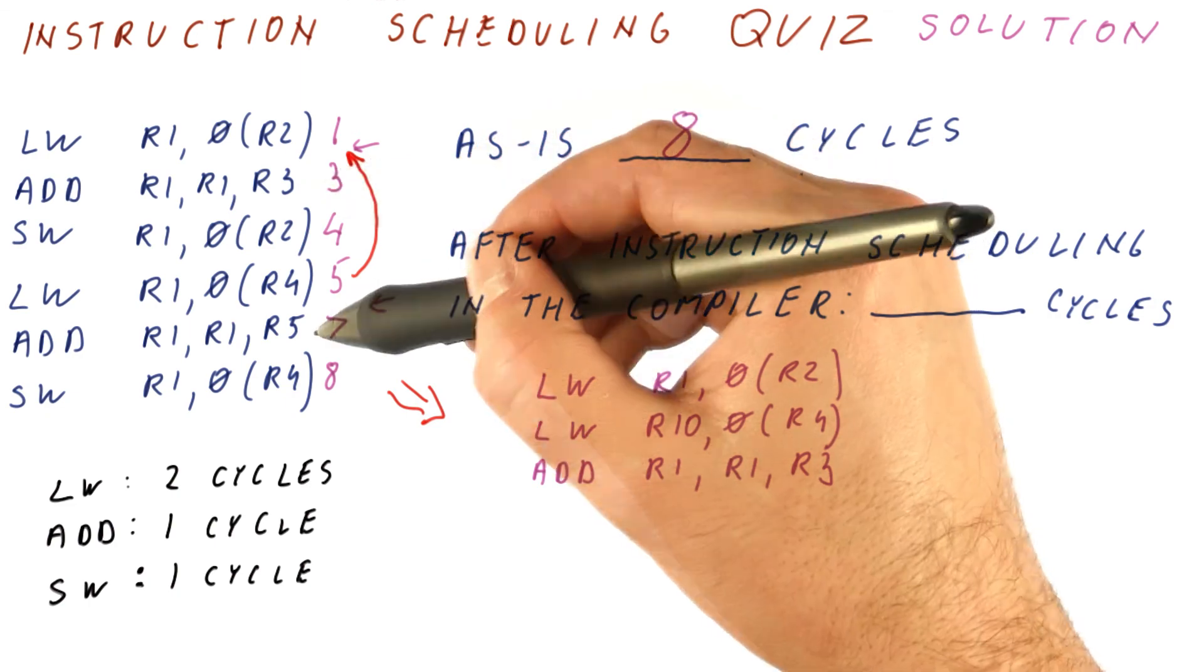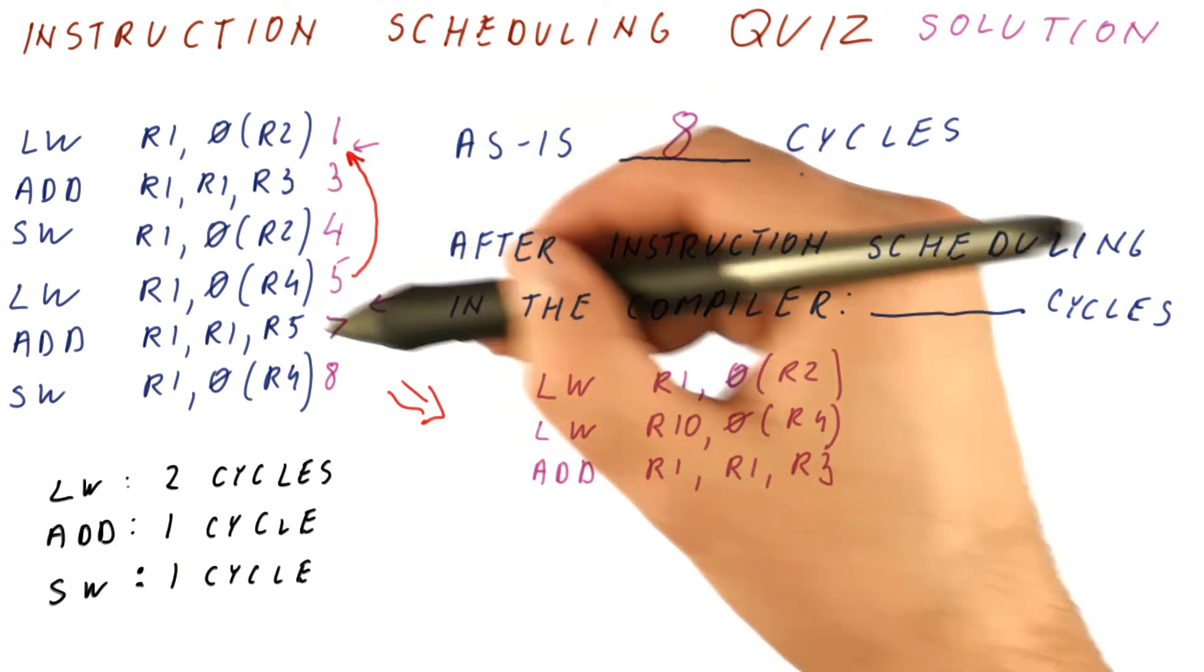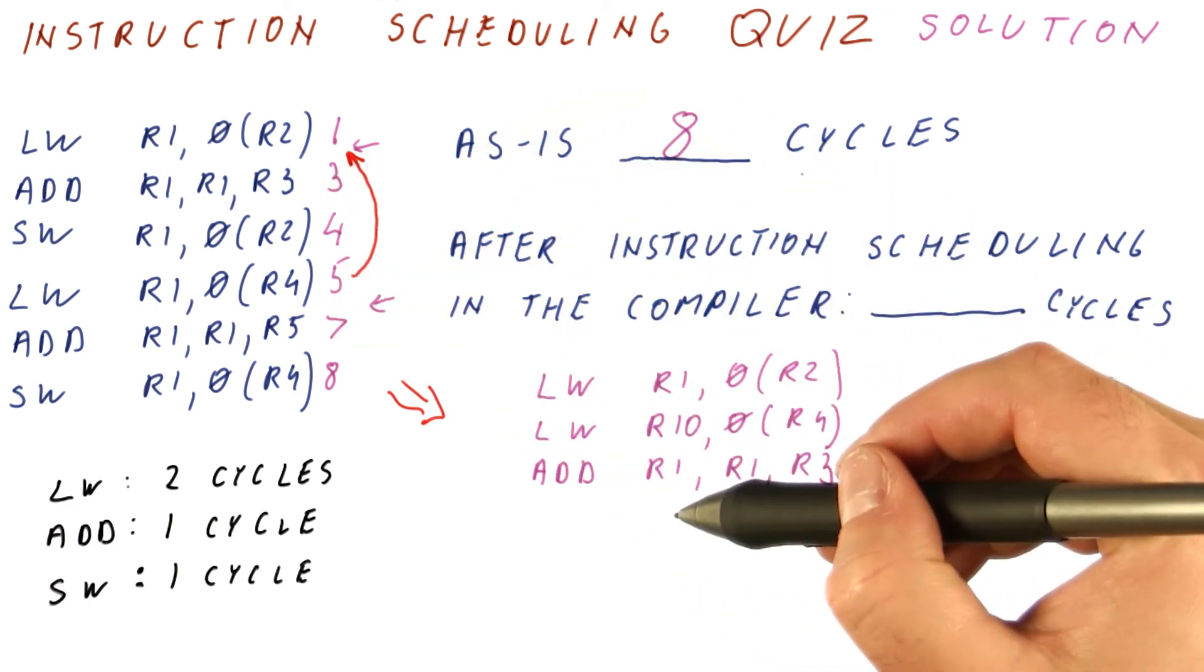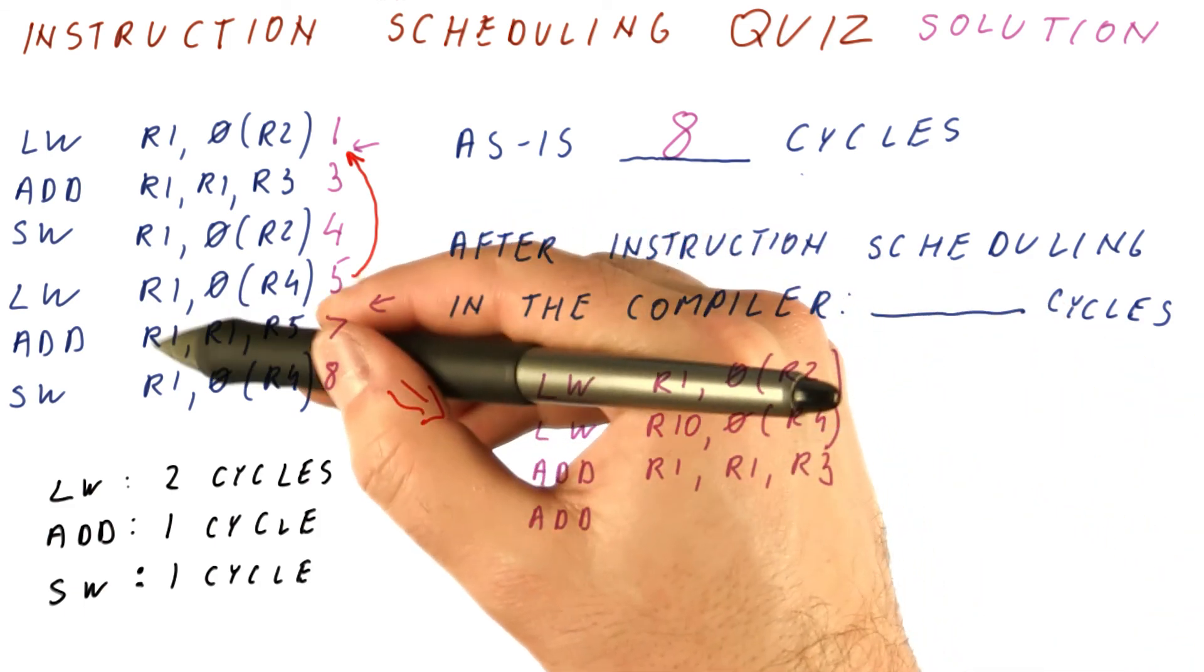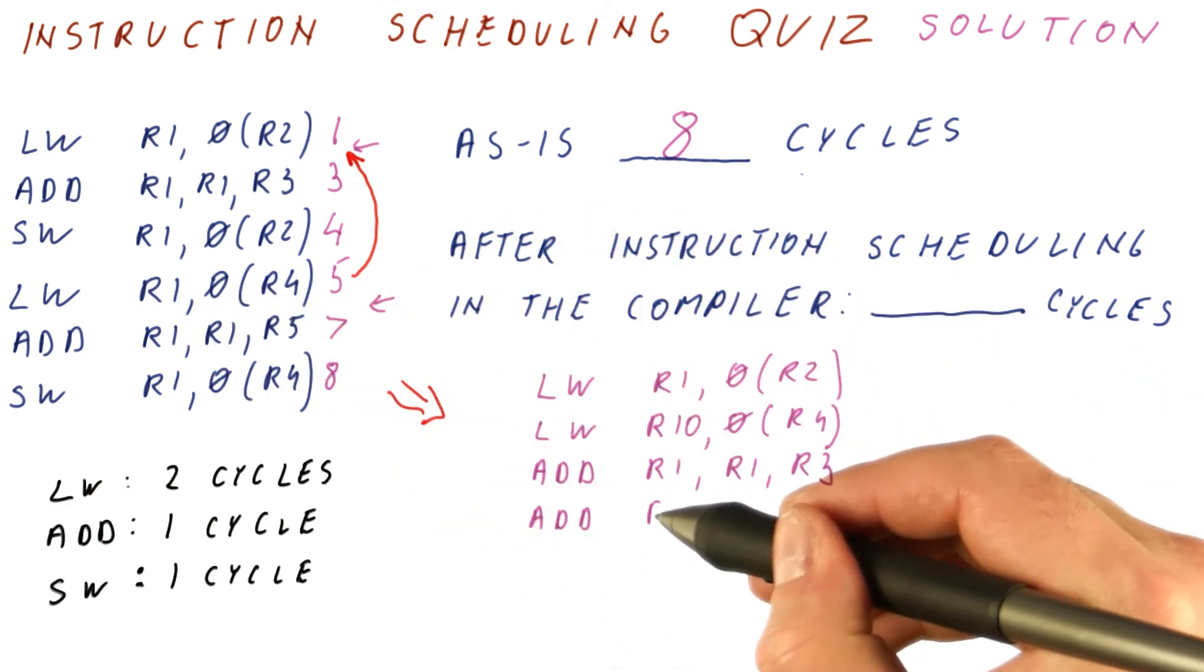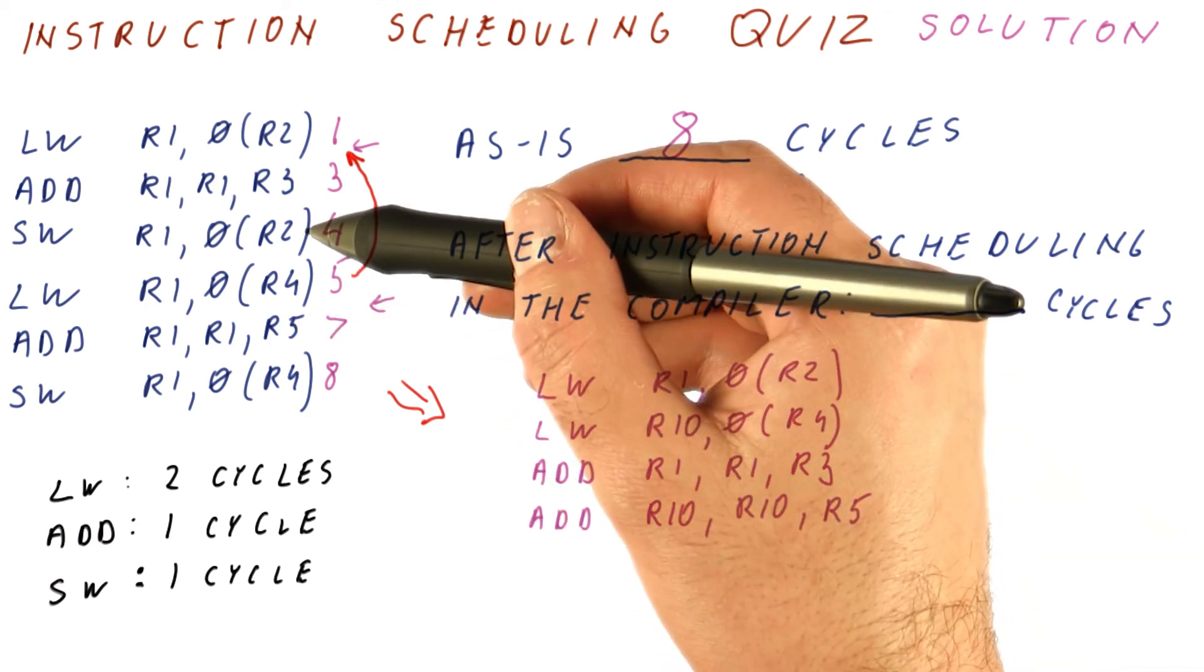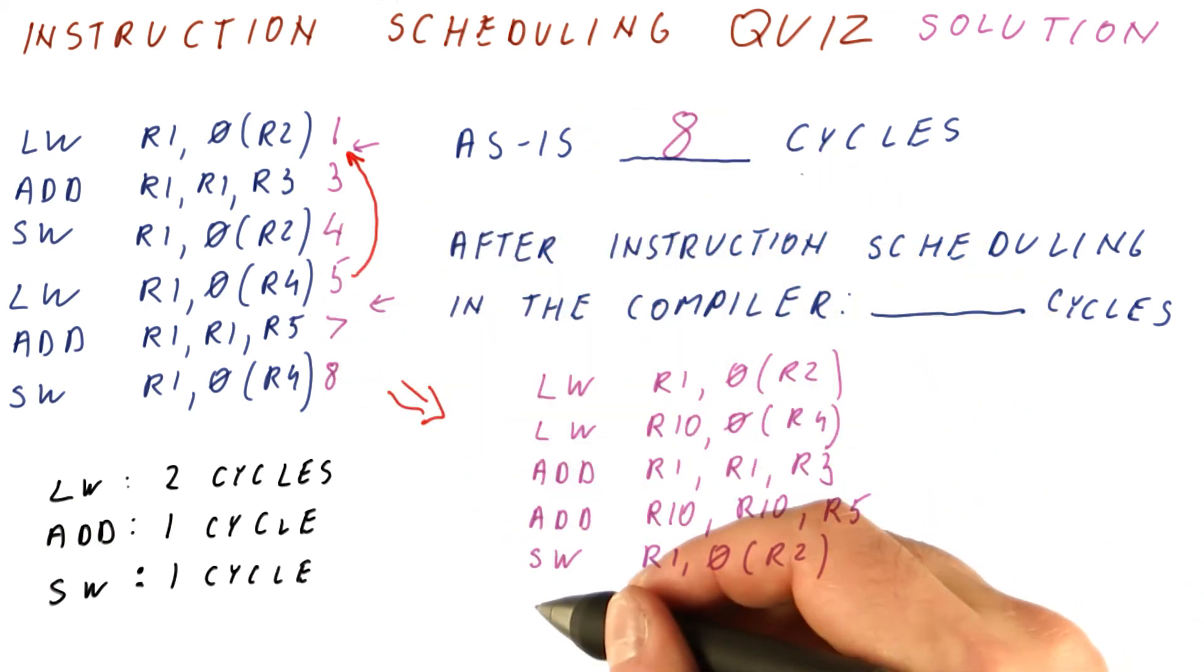Now that we have done this add, we can actually do this add. The load has already happened. We are now in the second cycle since then, so the second add can happen. The add was using R1, now we have to use R10. Next, we will do our store and the last remaining store.